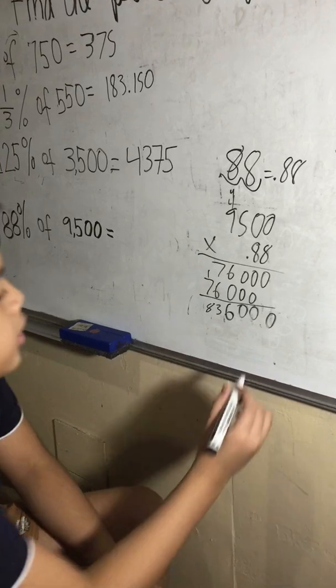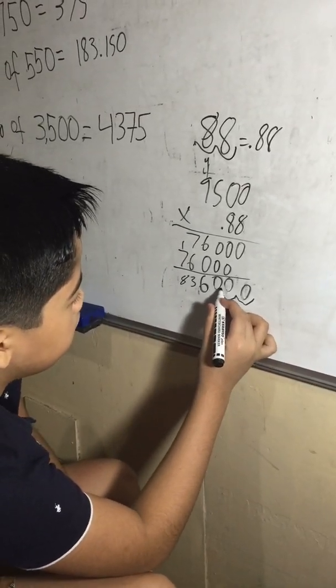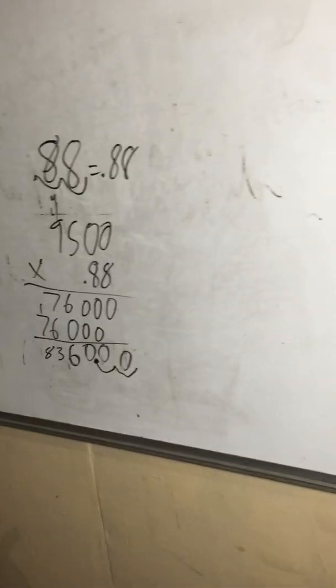There are two decimal places, move this two decimal places to the left. So the answer for number four would be 8360.